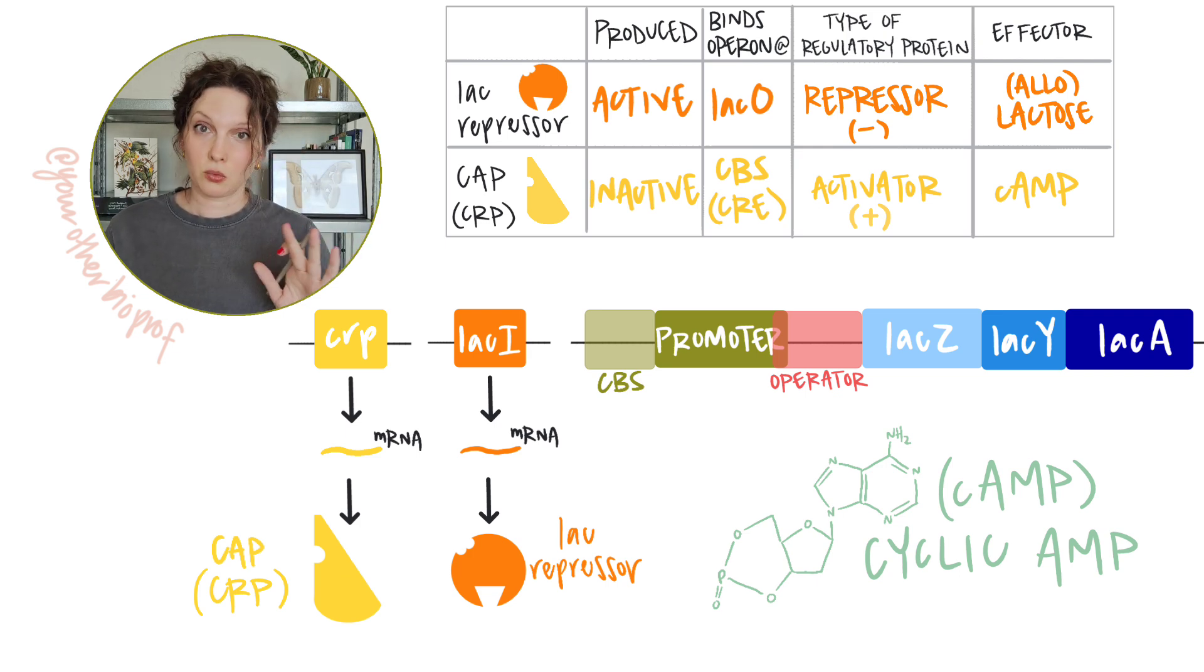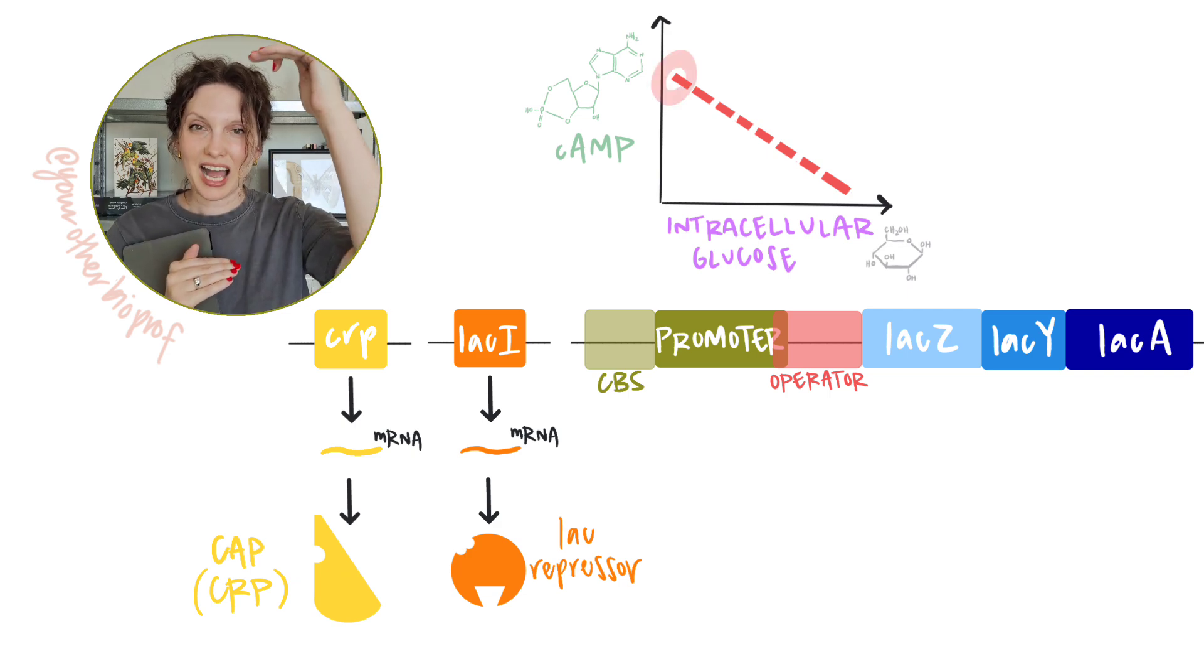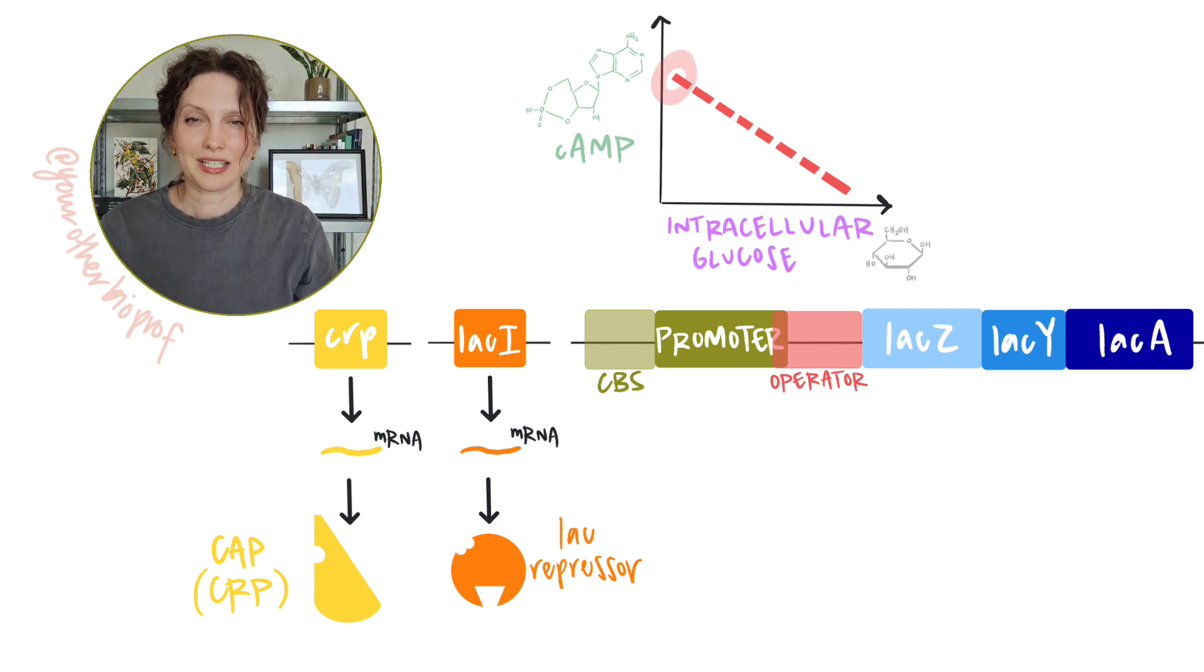Due to reasons that we're not going to get into right now, there's an inverse relationship between the level of cyclic AMP in the cell and the level of glucose in the cell. So when glucose is low, cyclic AMP is high. You can think of it sort of like a signal that the cell is running low on glucose and it needs to switch its food source up, get something else going.